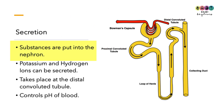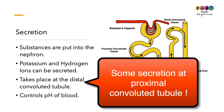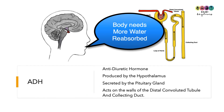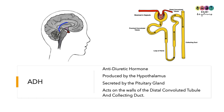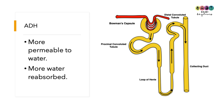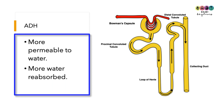Ions are secreted at the distal convoluted tubule, and sometimes substances are secreted at the proximal convoluted tubule. Hydrogen ions are secreted to control the pH of the blood. If the body needs to reabsorb more water, antidiuretic hormone (ADH) plays an important role — produced by the hypothalamus and secreted by the pituitary gland, it travels in the blood to the nephrons and acts on the walls of the distal convoluted tubule and collecting duct, making them more permeable to water.